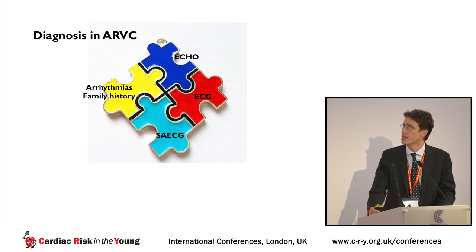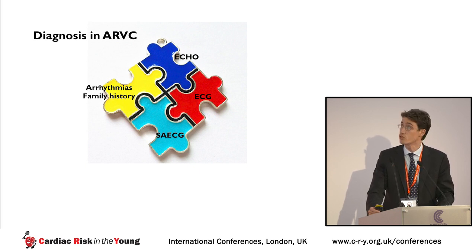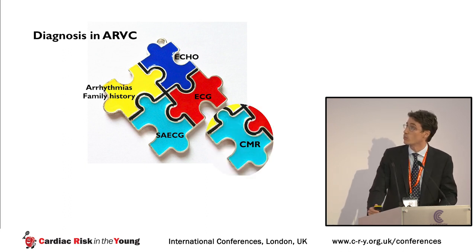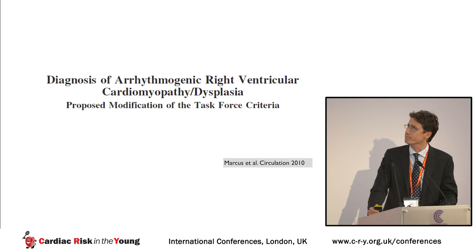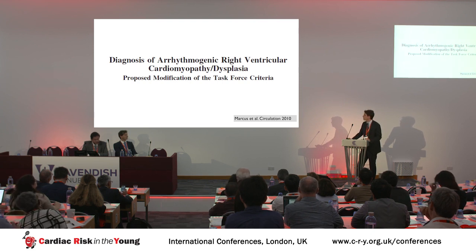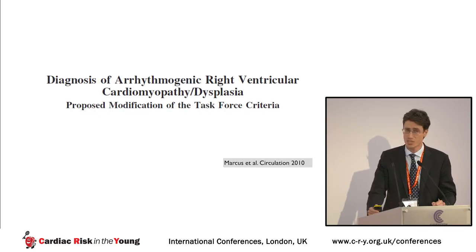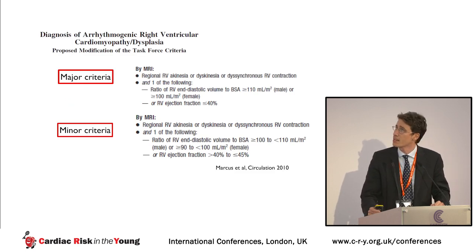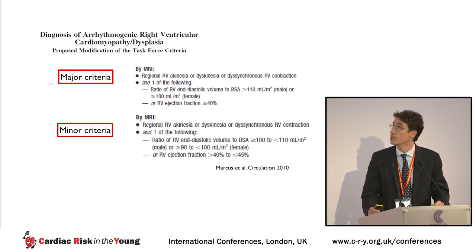We have several investigations we can and must use: ECG, echocardiogram, signal-average ECG, family history, personal history, arrhythmias, 24-hour tape, genetic tests, and cardiac MRI. To determine what is normal or abnormal and possibly suggestive of ARVC, we use the revised Task Force Criteria published almost 10 years ago. For cardiac MRI, the Task Force Criteria identify major and minor criteria.